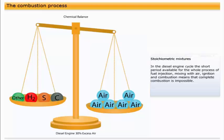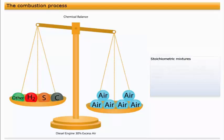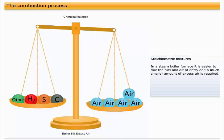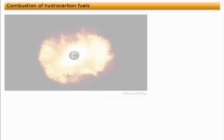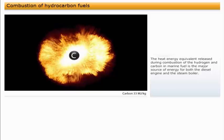In the diesel engine cycle, the short period available for the whole process of fuel injection, mixing with air, ignition, and combustion means that complete combustion is impossible. For the fuel combustion to be as complete as practically possible, air in excess of the stoichiometric amount is needed. This may be as much as 30% more than the ideal minimum. In a steam boiler furnace, it is easier to mix the fuel and air at entry, and a much smaller amount of excess air is required.